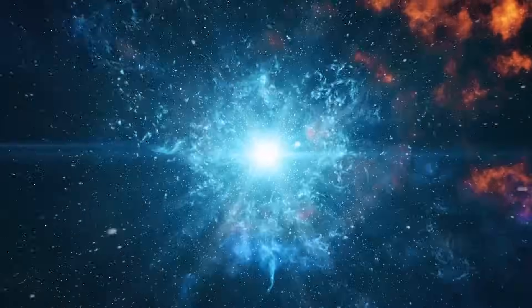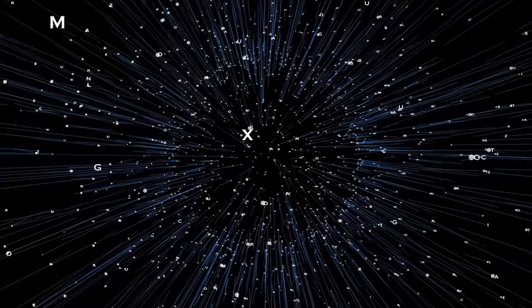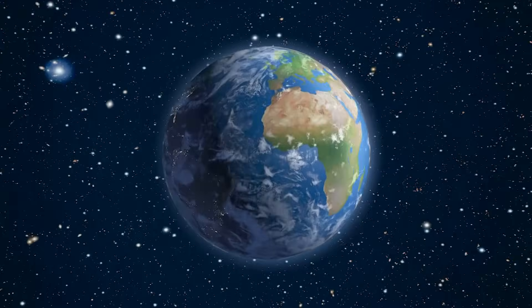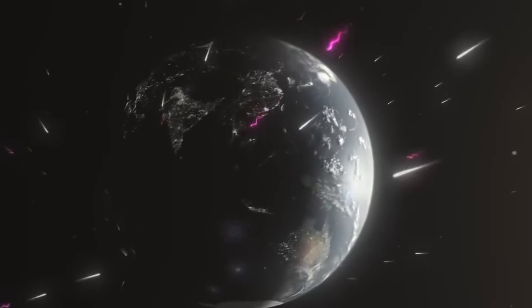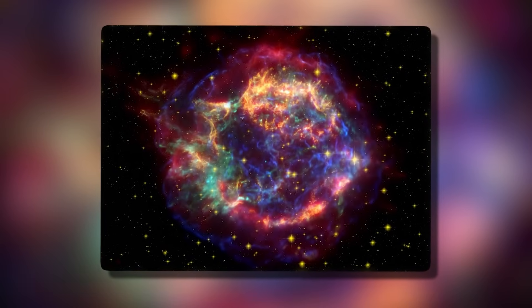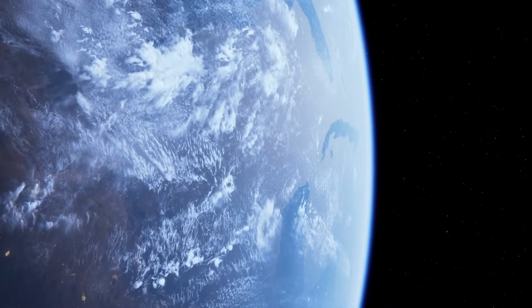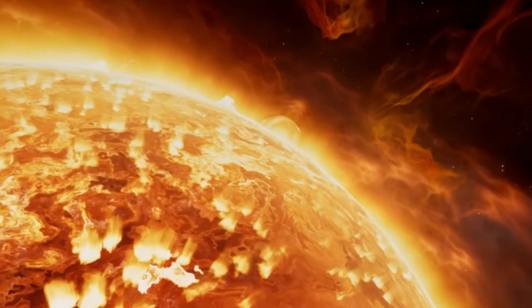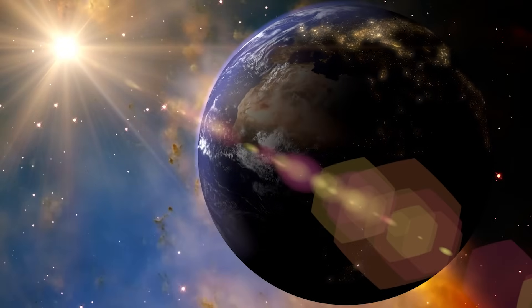The resulting supernova will send a wave of radiation and particles racing through the cosmos. While 642 light-years may seem like a comfortable buffer, this event's proximity places Earth within the danger zone of its direct energetic reach. This is no ordinary stellar event. A type 2 supernova at this distance is not merely an astronomical curiosity. It's a phenomenon capable of exerting real influence on our planetary environment.